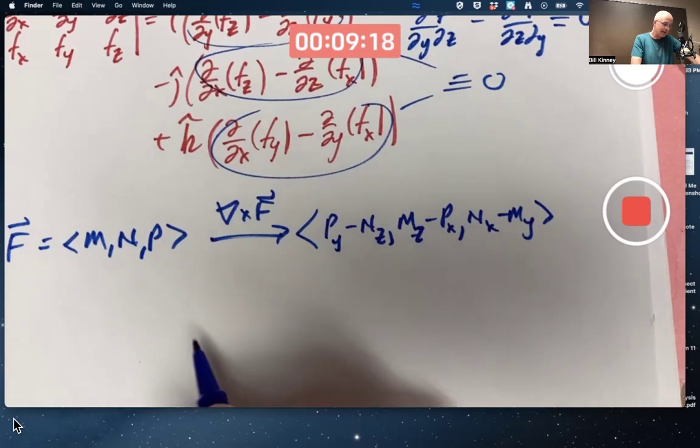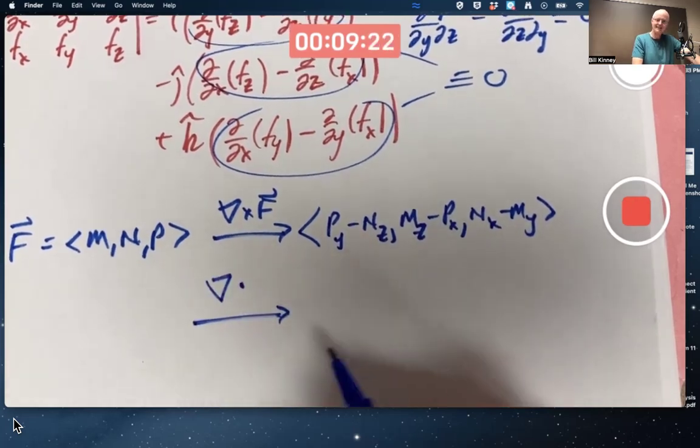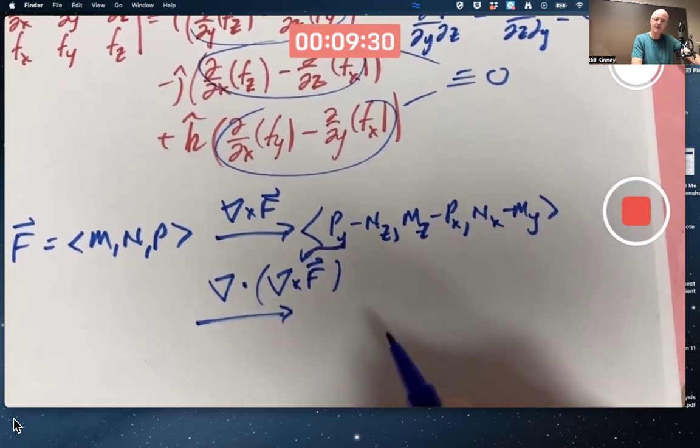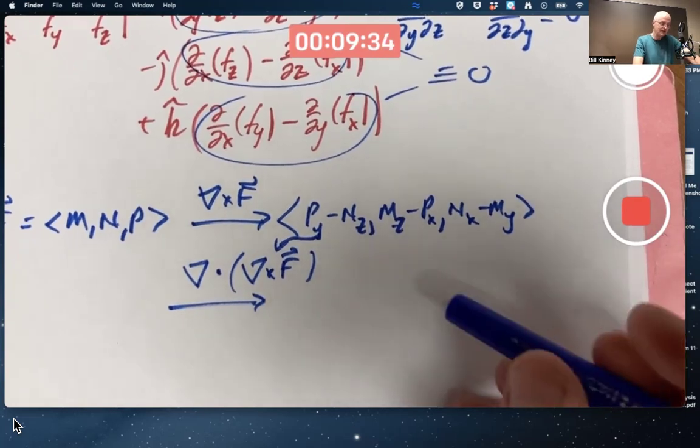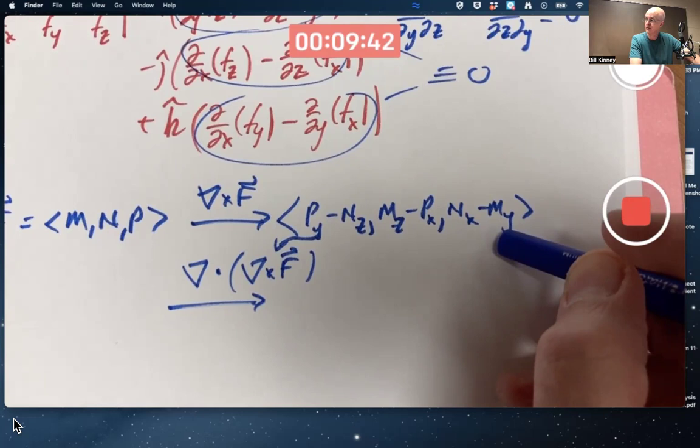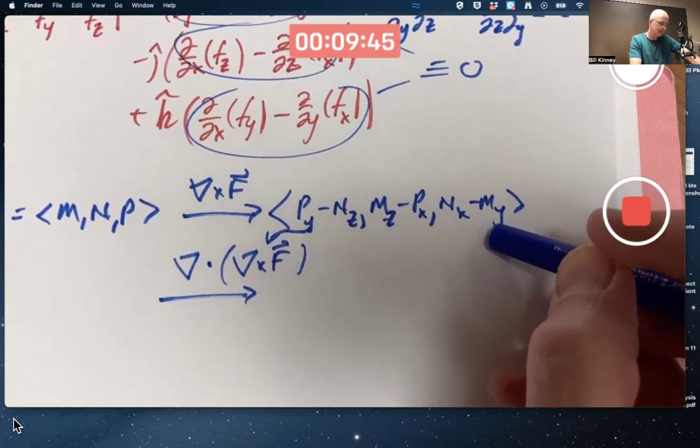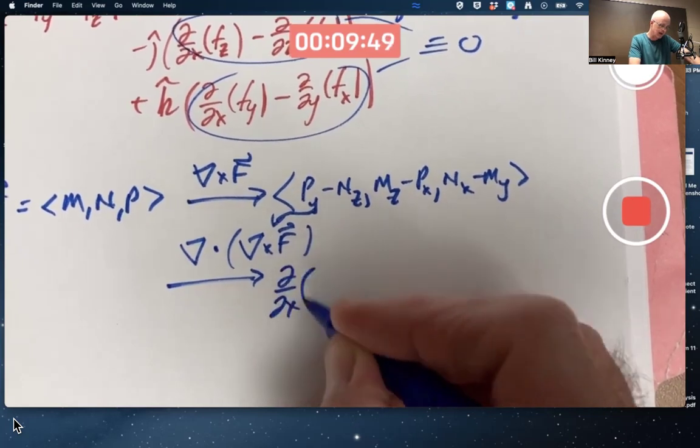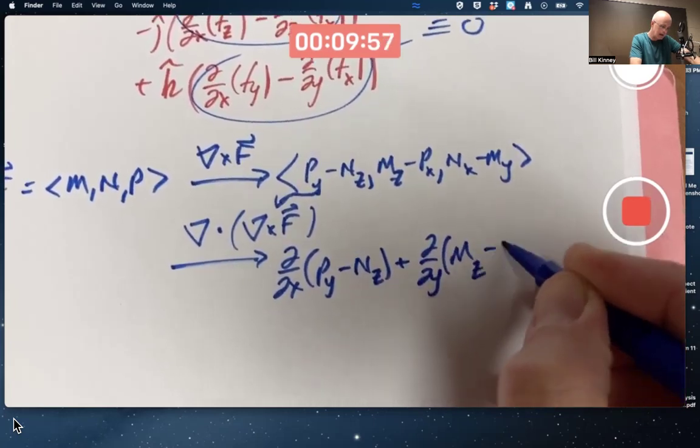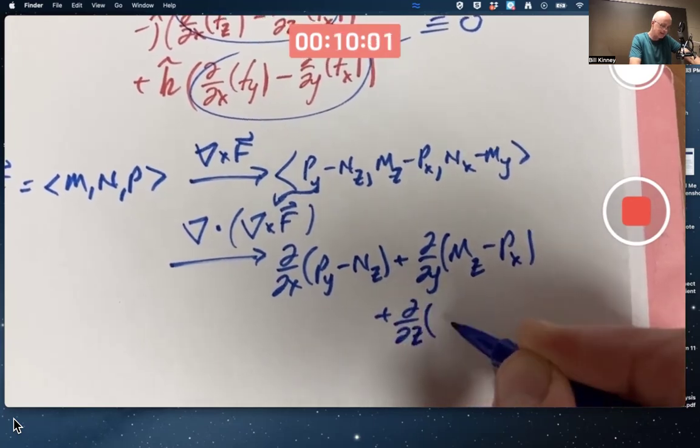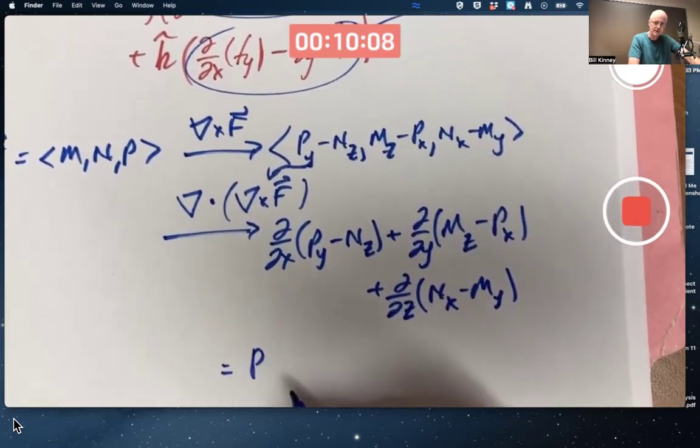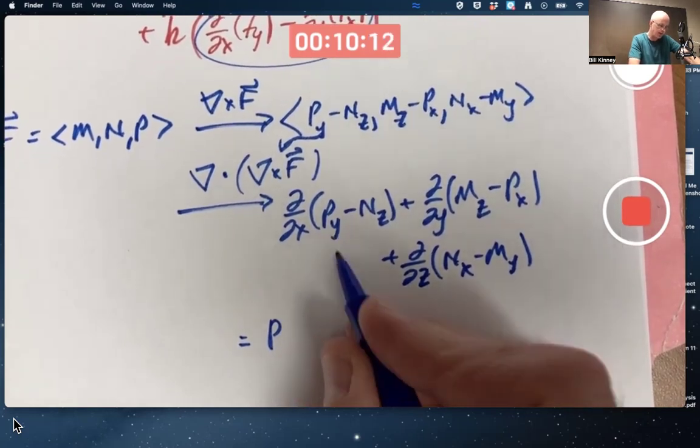And then, if you apply the divergence operator to that del dot that thing, putting that in here, what would you get? The divergence, remember for that, you take the derivative of the first component with respect to the first variable, add the derivative of the second component with respect to the second variable, add the derivative of the third component with respect to the third variable. It's a scalar, not a vector. I could write it like this. And then go ahead and simplify.